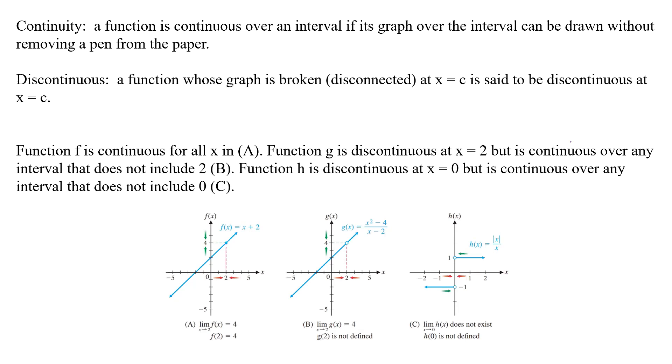Now, it's discontinuous if it's broken, and so it's disconnected. And so if it's discontinuous at x equals c, then you have to lift your pen at x equals c and then put it back down after that, and then you can continue on. So that would be disconnected.